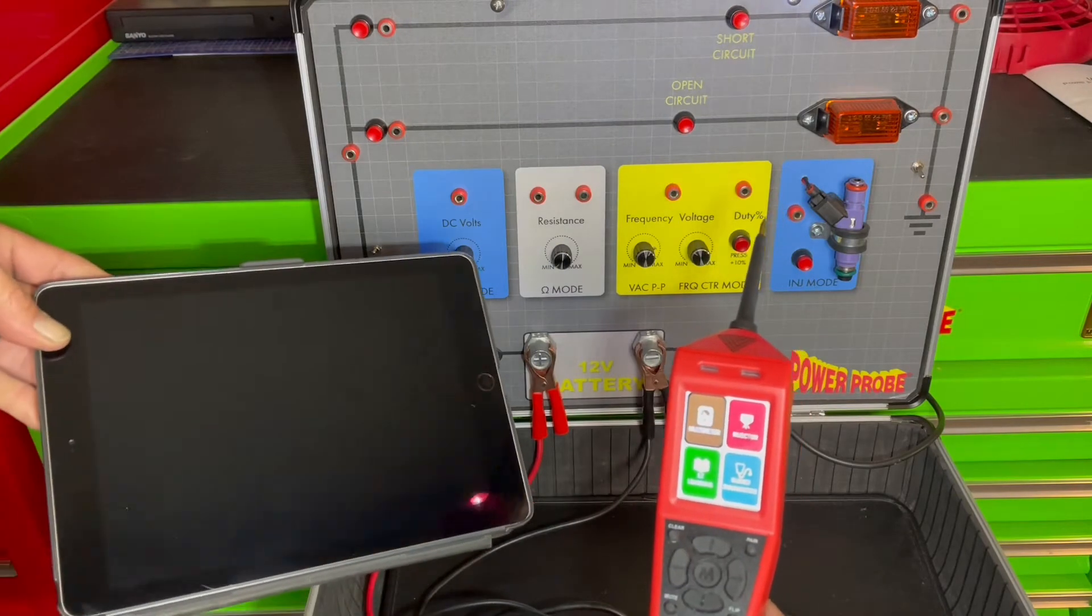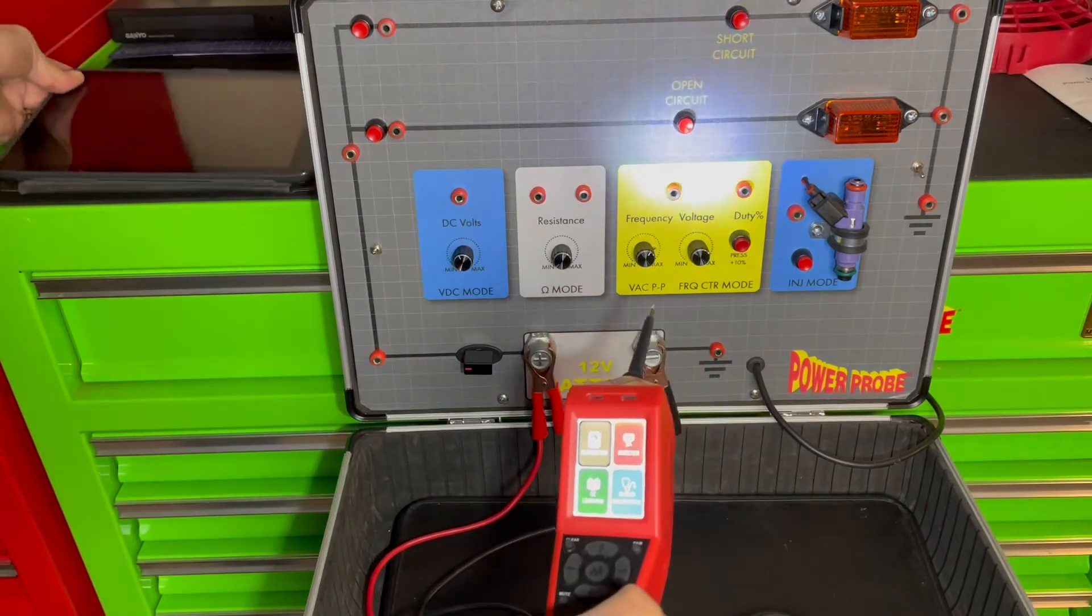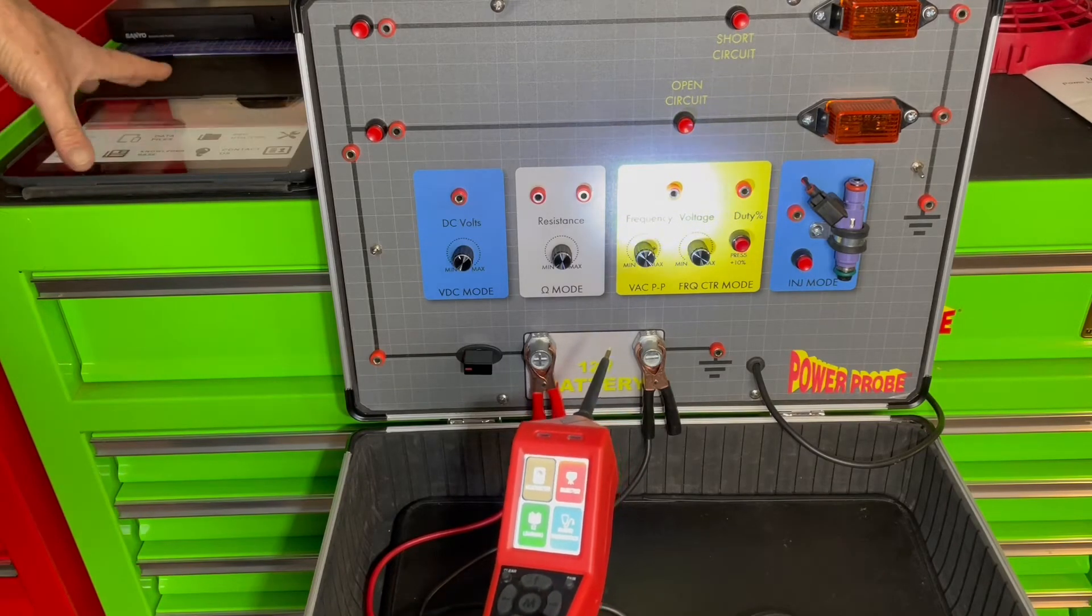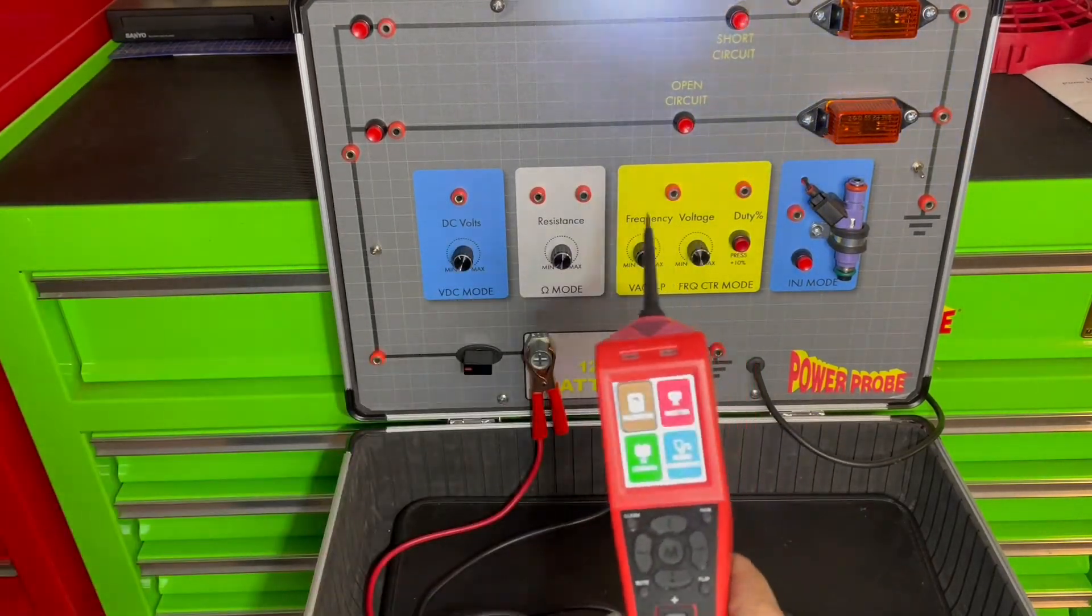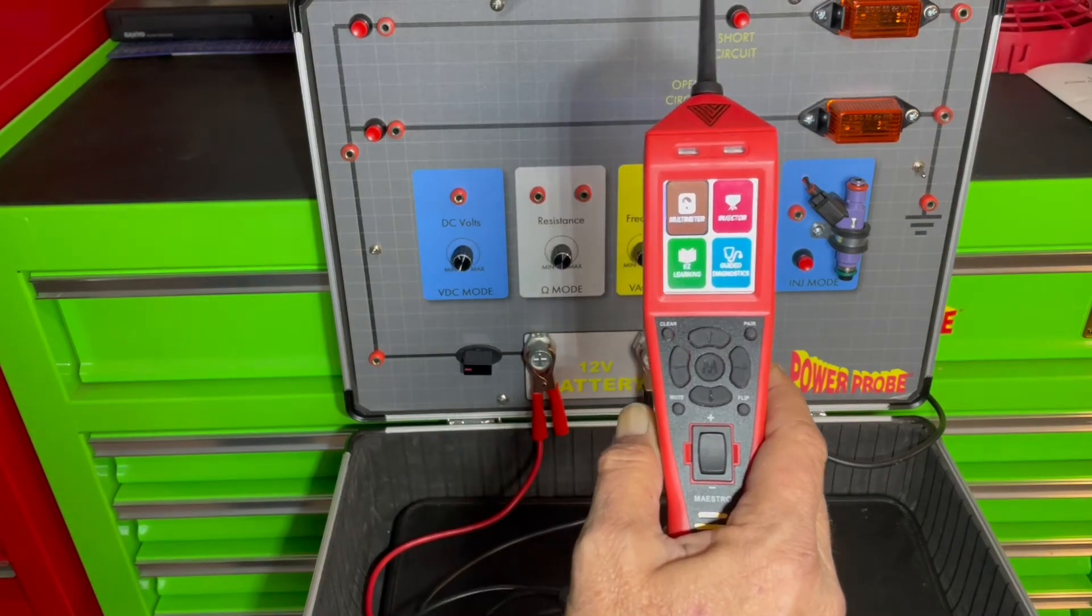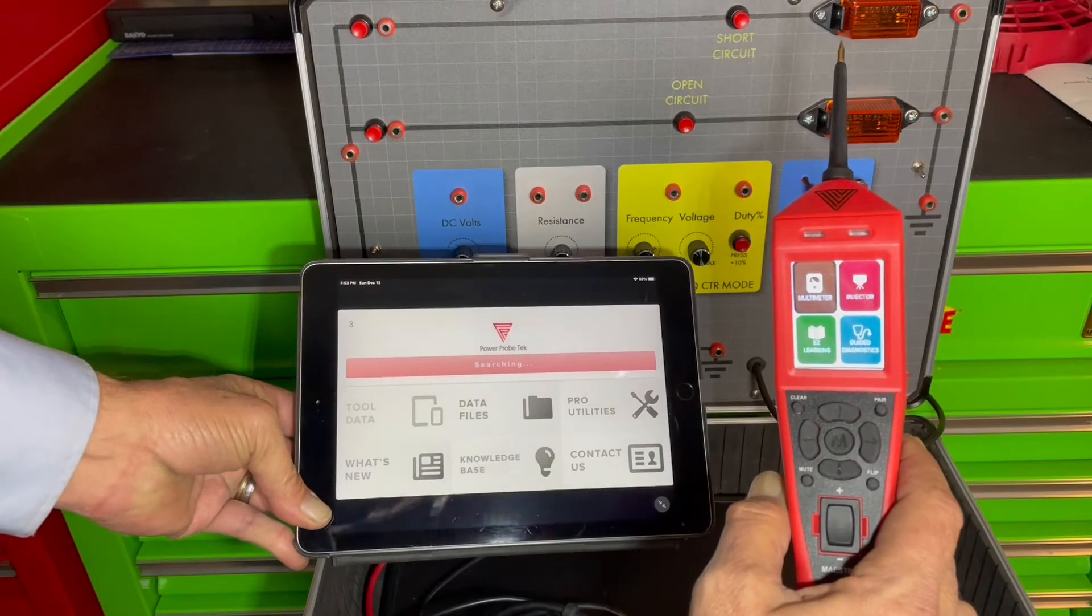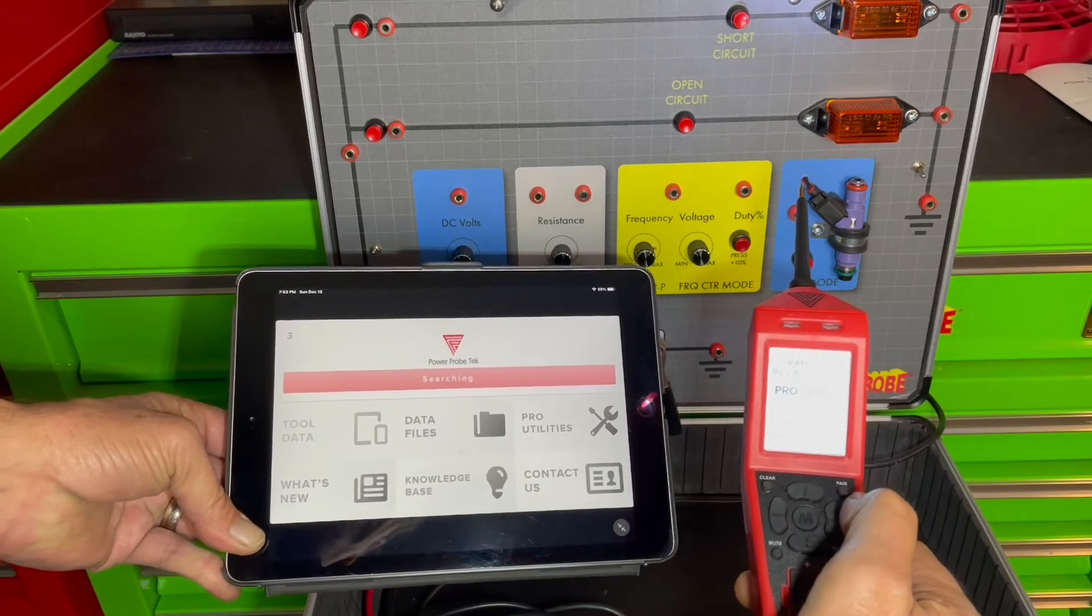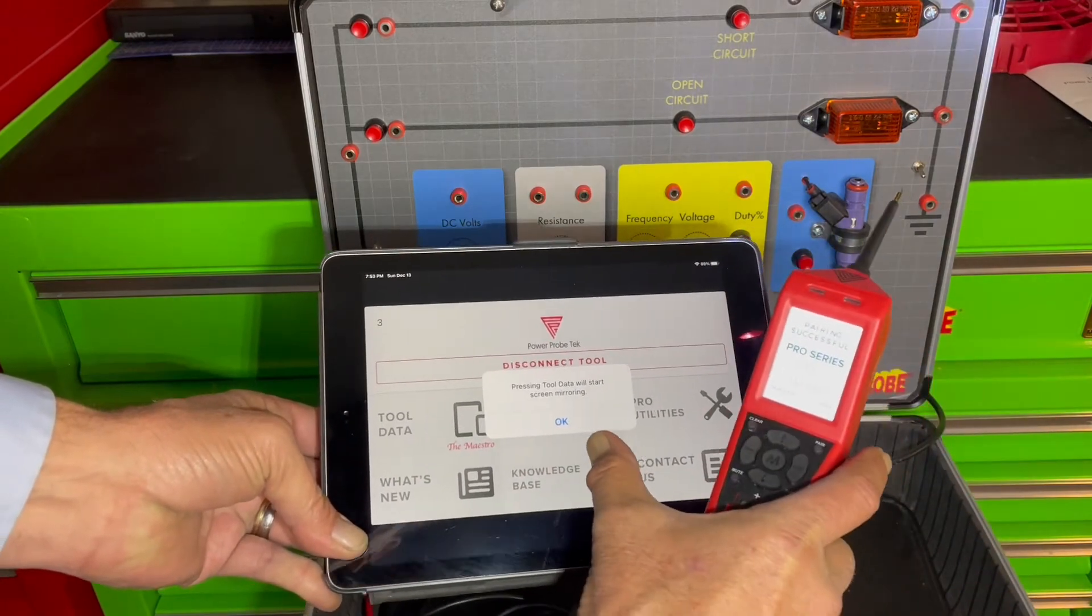Now this gives you the ability to pair the tool with iOS or Android devices, tablets, phones. We have the ability to pair the Power Probe Maestro with iOS or Android devices, tablets or phones, and we'll simply hit the pair button on the tool. There the pair tool tab came up and we'll say okay.